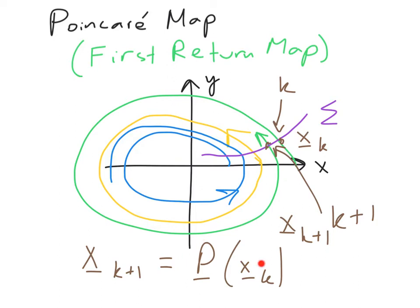So the Poincaré map of x sub k maps it to this point x sub k plus 1. And for another example, if we start here, the Poincaré map will map this black point to the point here.